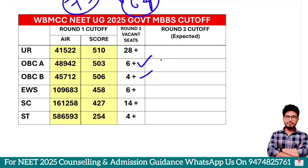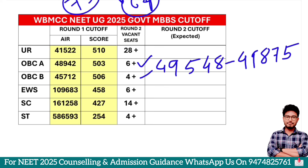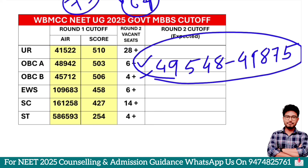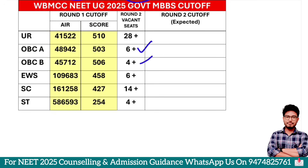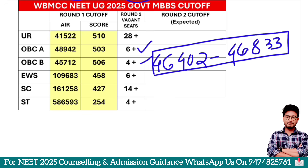OBC-A category cut-off is below. We will start with 49,548. We will start with 49,875. If you don't want to cut-off, then cut-off is below. But OBC-A or OBC-B category, we will discuss close. OBC-B category is 46,402. All India rank is 46,833. All India rank is close.